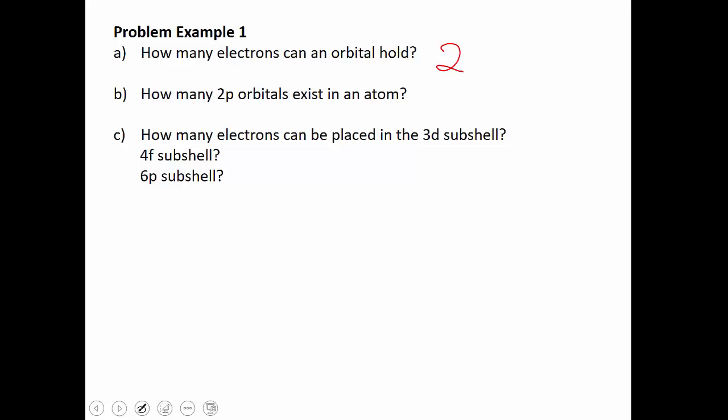When looking at how many electrons can be placed in a given subshell, take the number of orbitals and multiply by two. The 3D subshell: every D has five orbitals, times two gives a capacity of 10 electrons. The 4F subshell: every F has seven orbitals, times two gives a capacity of 14 electrons. The 6P subshell: all P subshells have three orbitals, times two gives a capacity of six electrons.